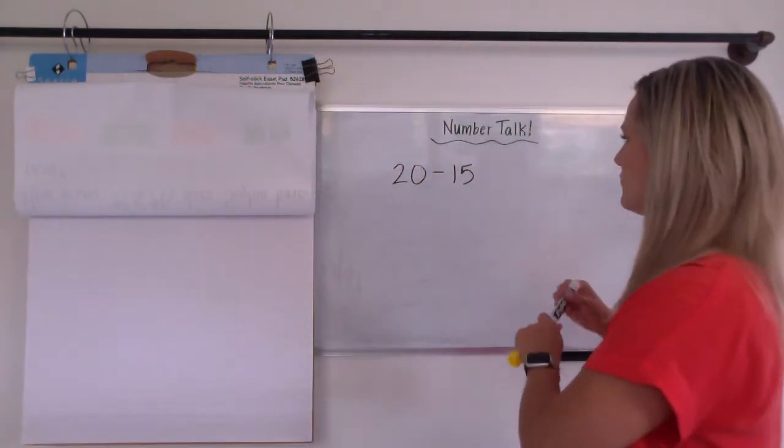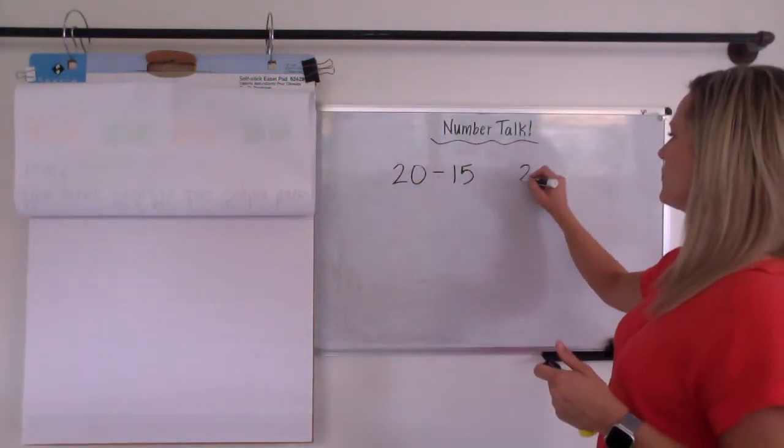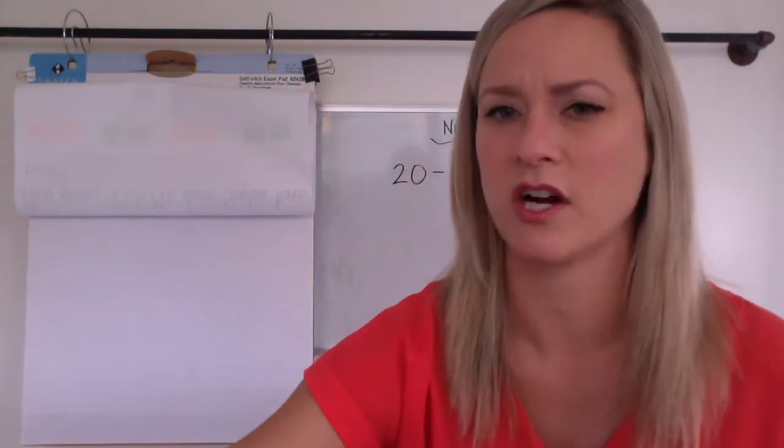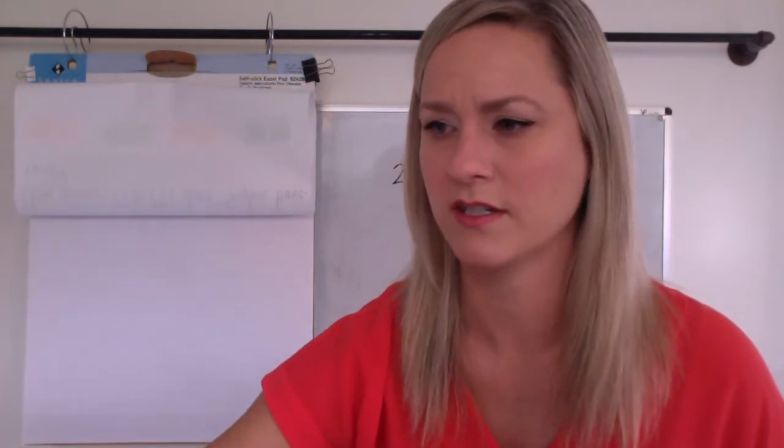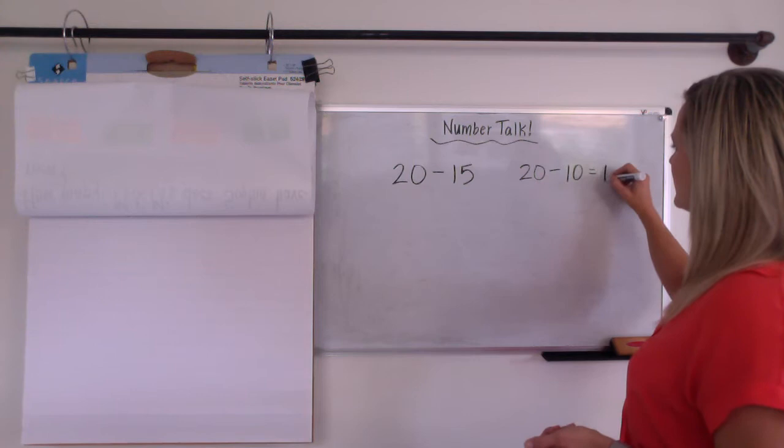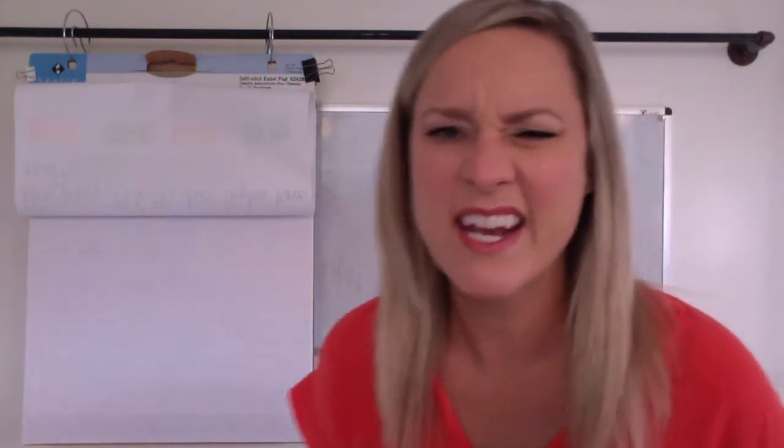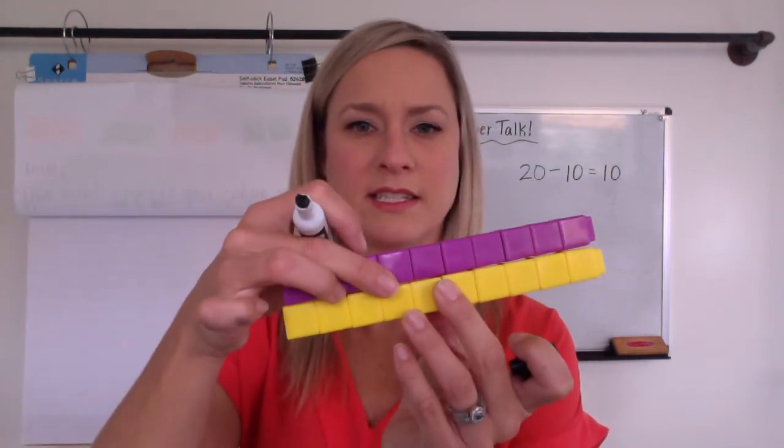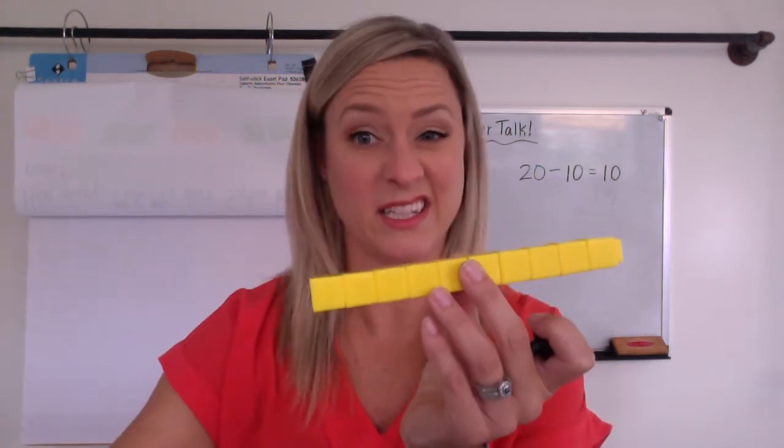Let's write that down what we just did with those moves. 20 minus 10. I did that first, right? I took off an entire 10 first. So 20 minus 10 equals 10. And then I still had a 10 rod. And then I took off.